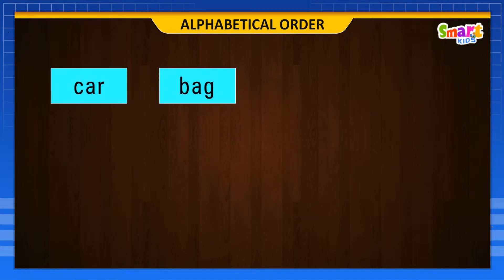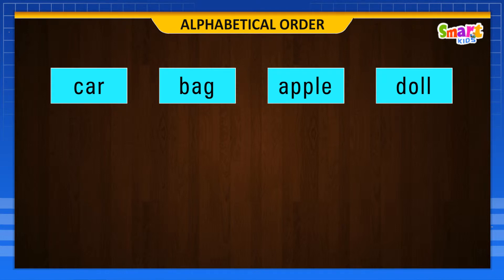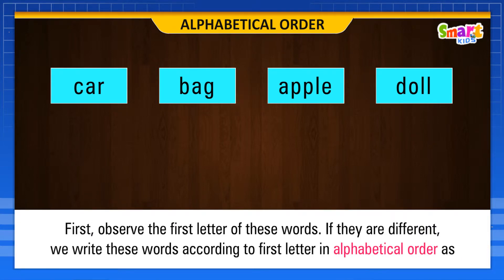Look at these words: car, bag, apple, doll. First, observe the first letter of these words. If they are different, we write these words according to first letter in alphabetical order as: